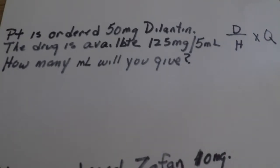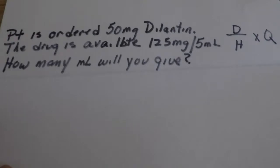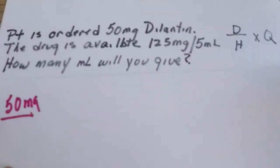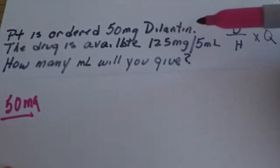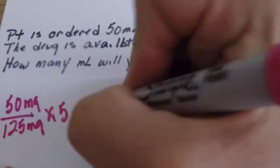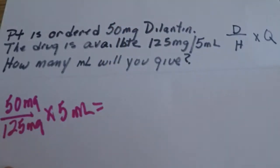The doctor has ordered 50 milligrams of Dilantin. The drug is available 125 milligrams per 5 ml. How many ml will you give? Plug our numbers in: the desired dose is 50 milligrams. The drug is available — this is what we have — 125 milligrams per 5 ml.